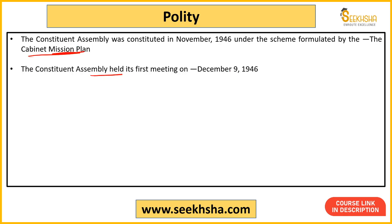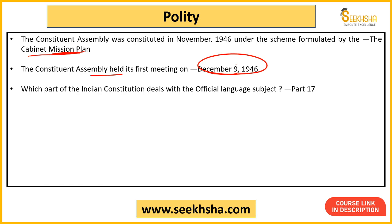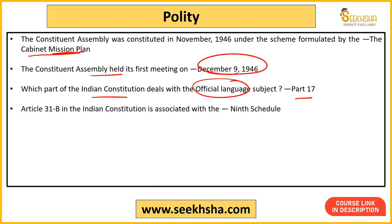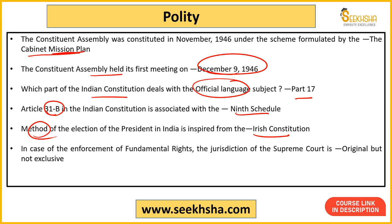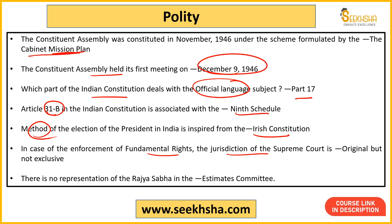The first meeting of the Constituent Assembly was on 9 December 1946 — important to remember. Part 17 of the Indian Constitution deals with Official Language. Article 31B is associated with the 9th Schedule, which provides protection to certain laws. The concept of the President of India is borrowed from the Irish Constitution. Regarding enforcement of fundamental rights, the jurisdiction of the Supreme Court is original but not exclusive — you can go directly to the Supreme Court, but not exclusively, because you can also approach lower courts.